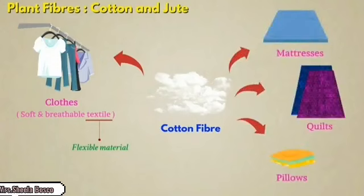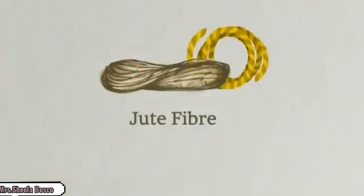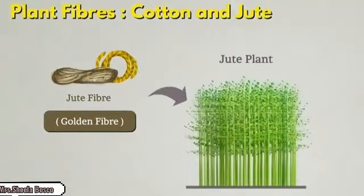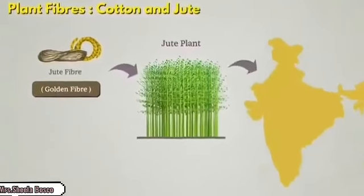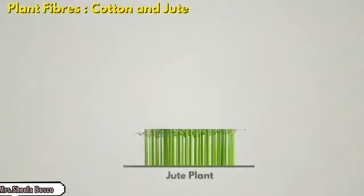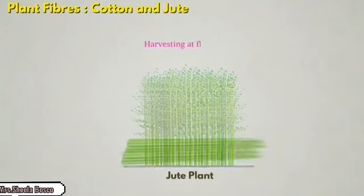Next we go to the golden fiber. Why is it called golden fiber? Because of its color — it has a light golden color. It is also a good fiber. It grows mostly in Bihar, West Bengal, and Assam. This is a long jute plant, and during the flowering time they harvest it. The outer skin is the important part — that skin, called ribbon or outer skin, is only the main part.